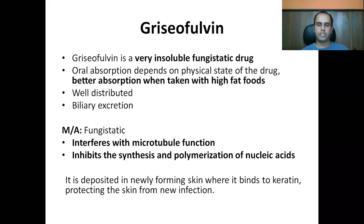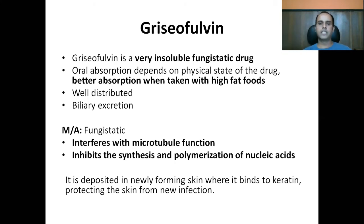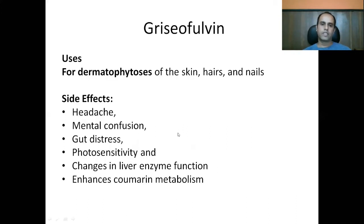Griseofulvin is a very insoluble fungistatic drug. Oral absorption depends upon the physical state of the drug — it absorbs better when taken with high-fat food. It is fungistatic and interferes with microtubule function, inhibiting synthesis and polymerization of nucleic acids. It gets deposited in newly forming skin where it binds to keratin and protects the skin from new infection. Therefore treatment takes a relatively long time. It is used for various dermatophytes of skin, hair, and nails. Side effects include headache, mental confusion, GI distress, photosensitivity, changes in liver enzyme function, and it enhances coumarin (warfarin) metabolism.